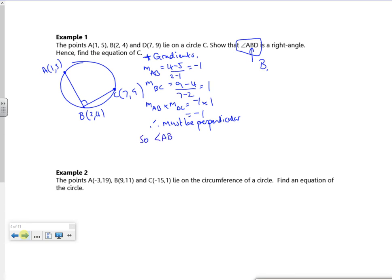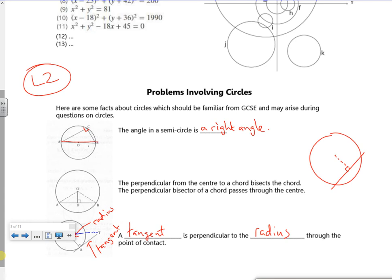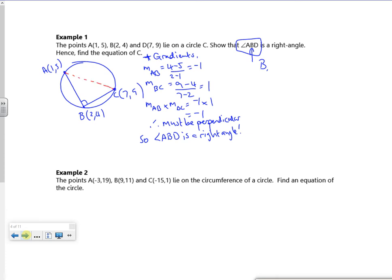So angle ABD is the right angle. That's quite nice, that. That information is good for us because it goes back to what we did here. So I've got my right angle. That means that that other line is the diameter, which means that A to C is the diameter. So this is telling us that A to C is the diameter. So the midpoint of A to C must be the center.